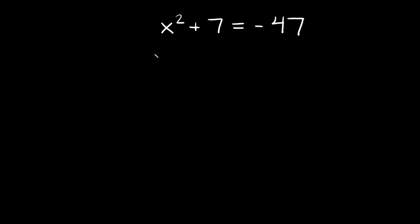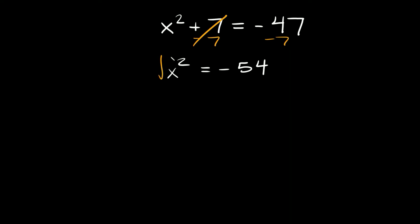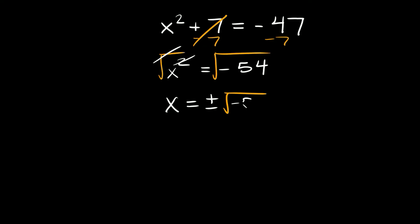Let's try one more. Here we have x squared plus 7 is equal to negative 47. Solving for x, we isolate it by subtracting 7 from both sides. Those cancel out so we get x squared is equal to negative 54. To solve for x and get rid of the exponent, we take the square root of both sides. Those cancel out, leaving x equal to plus or minus the square root of negative 54.